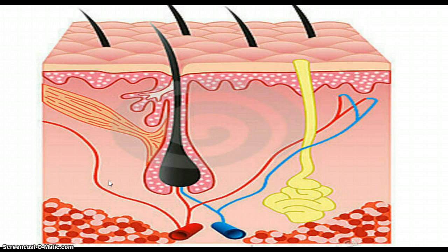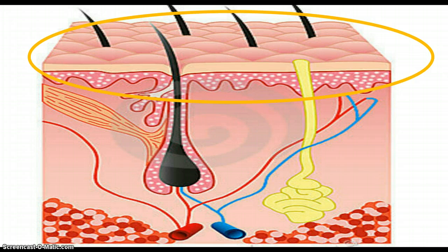First we have the epidermis, which is that top layer of skin that you see. It mainly protects the skin and is renewed very frequently. It provides a waterproof barrier and creates your skin tone.